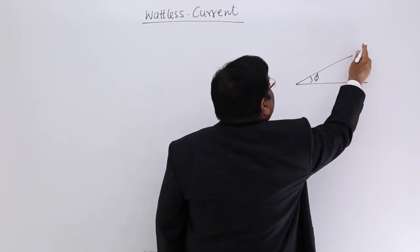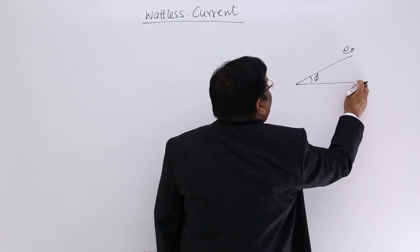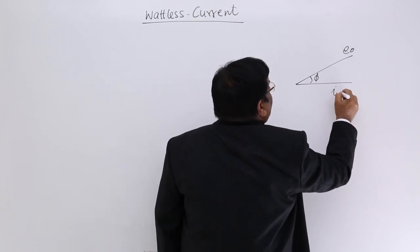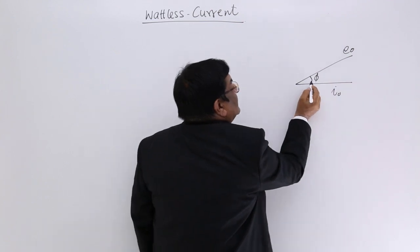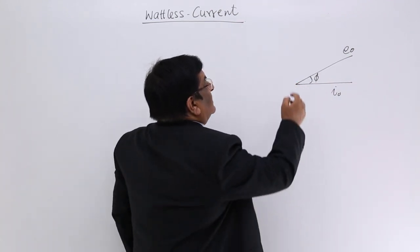If this is E0 phase and this is I0 phase, then this represents the phase difference between the two.